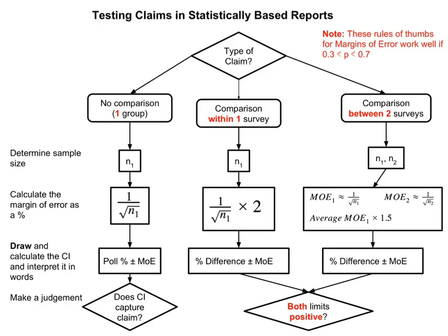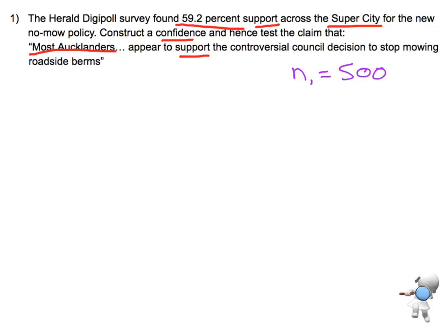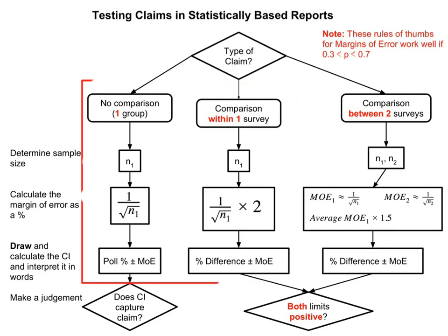Now I'm going to look at my chart to determine which of the three scenarios I'm in. I know I've only got one sample size, so I must be in one of these two categories — either no comparison with one group, or comparing within one survey. Going back to the question, it's talking about 59.2% support for the policy, so we're only looking at a single value. We're not making a comparison, so I'm not in the comparison scenario.